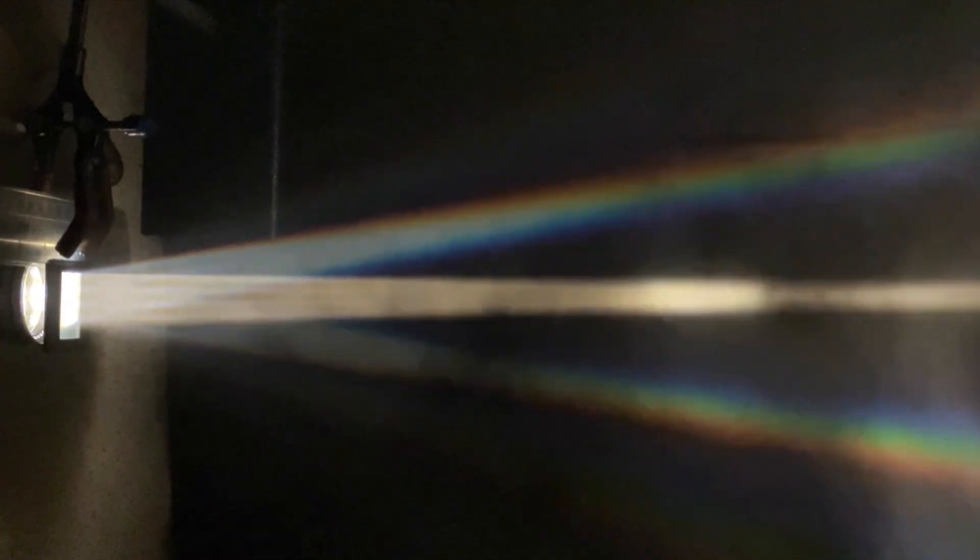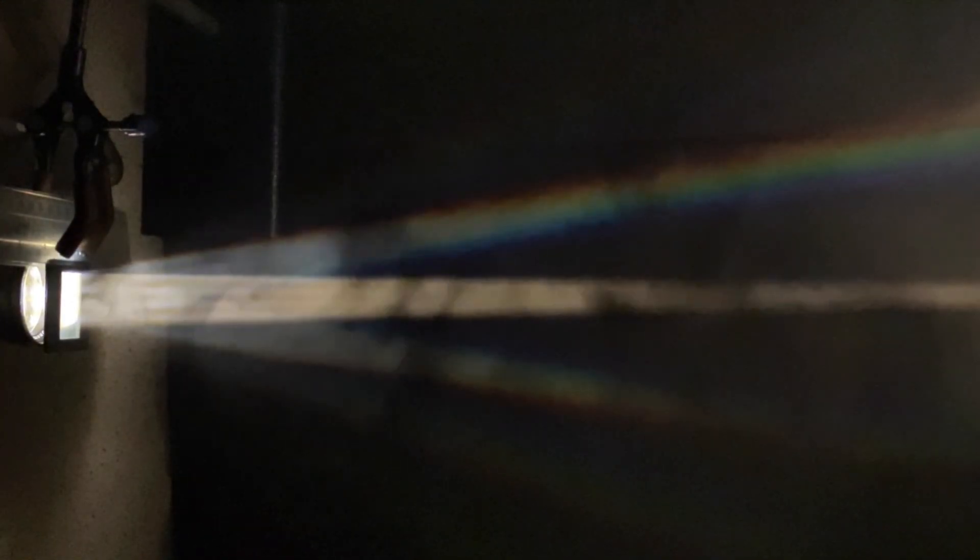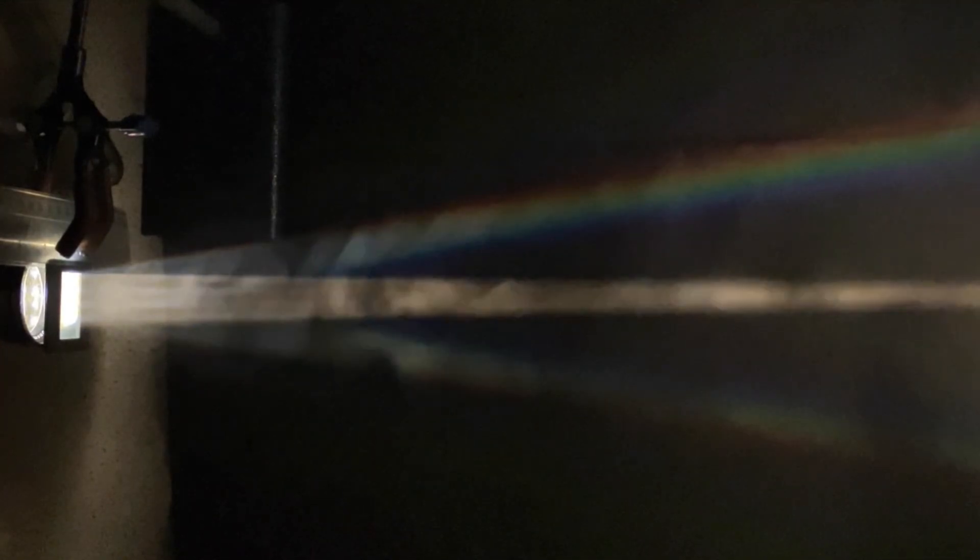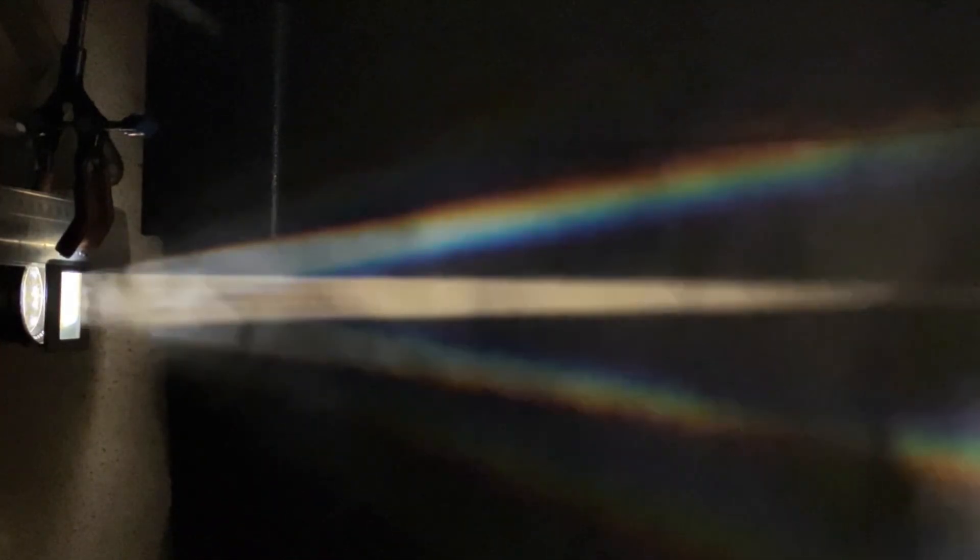But how does a diffraction grating, which consists of hundreds or thousands of slits in every millimeter of grating, split white light up into all of its component colors or wavelengths?